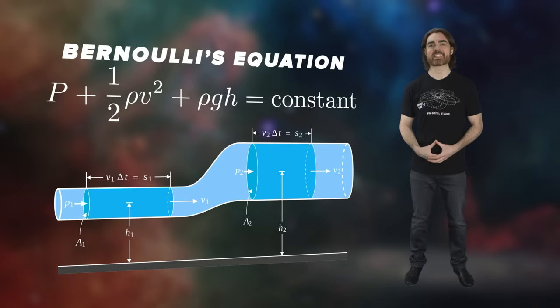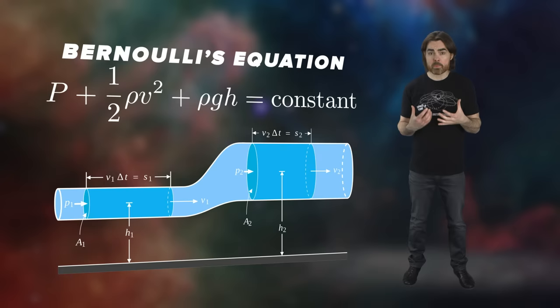Energy doesn't care what the individual particles are doing. Instead, the concept of energy allows us to write down equations describing the evolution of the entire system. For example, Bernoulli's equation predicts the flow of fluids by demanding the conservation of the kinetic and potential energy of the fluid and also of the internal energy due to fluid pressure. It ignores the individual particles in the fluid. And the concept of energy and its conservation has led to new types of mechanics that have supplanted Newtonian mechanics.